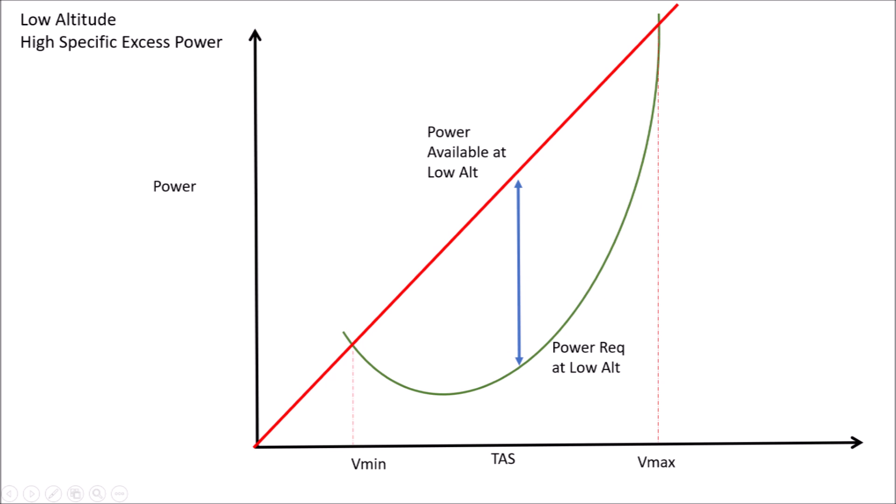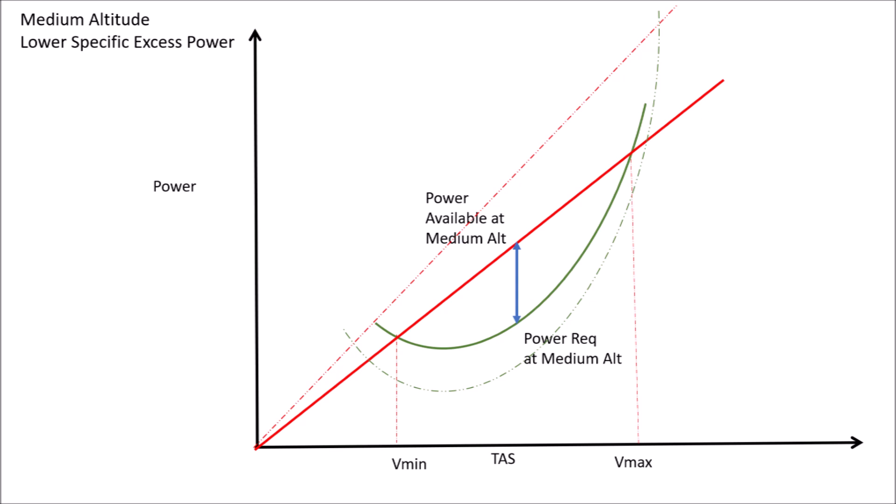The difference between power available and power required is called excess power. This excess power can be used either to climb or to accelerate the aeroplane. At low altitude the engine produces more power, hence the difference is highest at sea level. At medium altitude, the power available reduces and the power required increases, so excess power reduces and the minimum and maximum speeds start moving closer to each other.